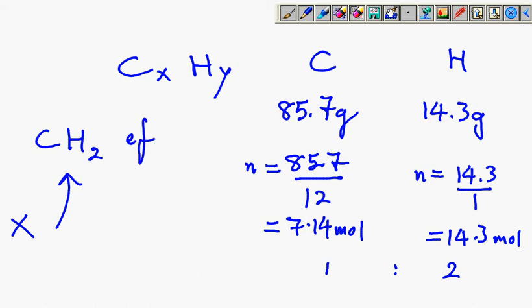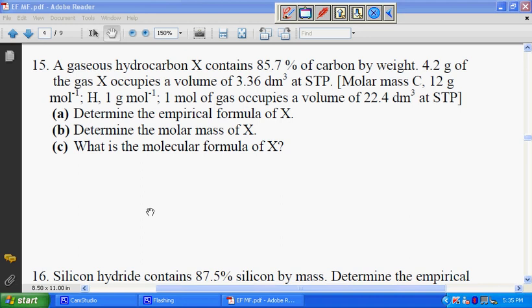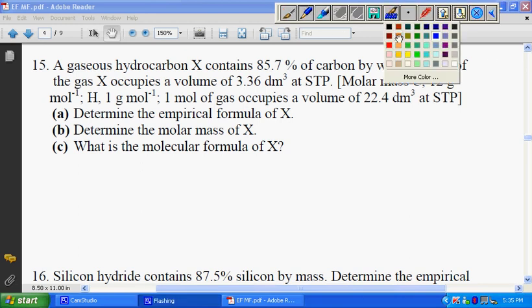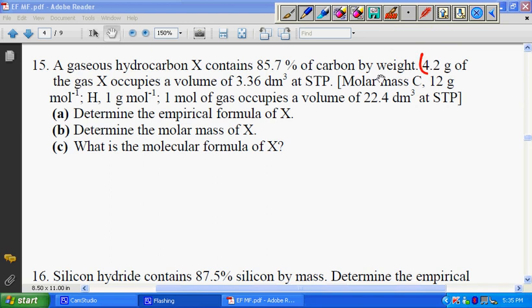Let's go back to the question. Do you also realize that they give us additional information: 4.2 grams of the gas X occupies a volume of 3.36 dm cubed at STP.